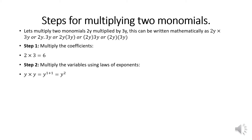Even though we don't write the exponent, we must know that it's there. If there was a 0 exponent, it would have been a 1. But since there is a y, the exponent is 1. So when we multiply two variables which are the same, we add the exponents.